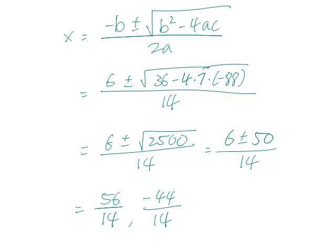but the other one, negative 44 over 14, that's a new one. And if we simplify this, this is going to be negative 22 over 7.